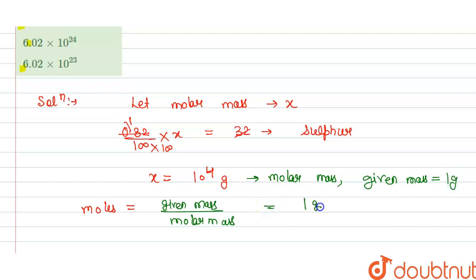So we have 1 gram divided by 10 power 4 grams, so this will become 10 power minus 4 moles.